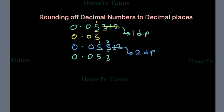Let's still use the same decimal number 0.05312 and we're to round this, this time around, off to three decimal places.